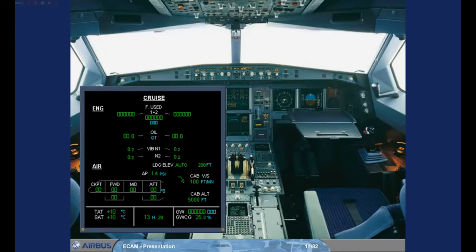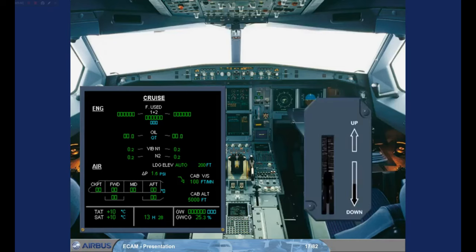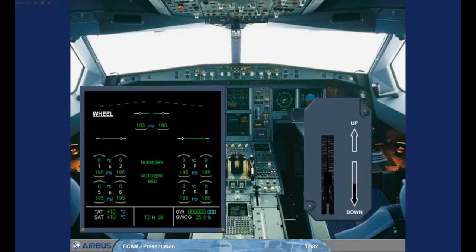Under normal conditions, the ECAM system provides the pilots with the information that they need to know for the particular phase of flight — no more, no less. As an example, during the approach, when the landing gear is extended, the ECAM wheel system page is automatically displayed.